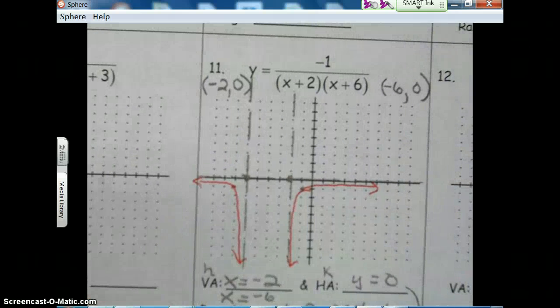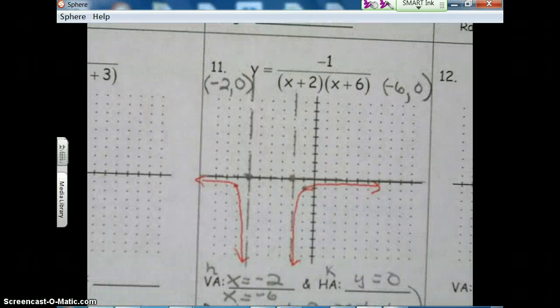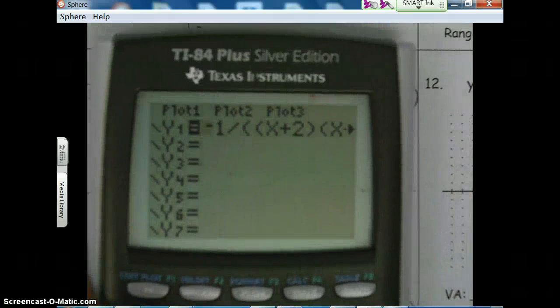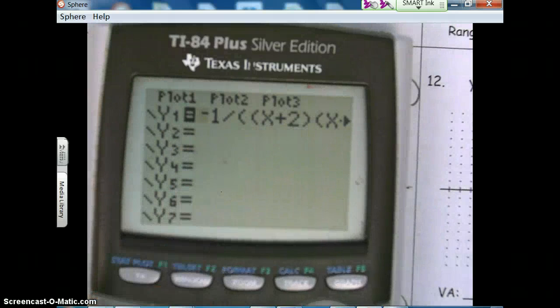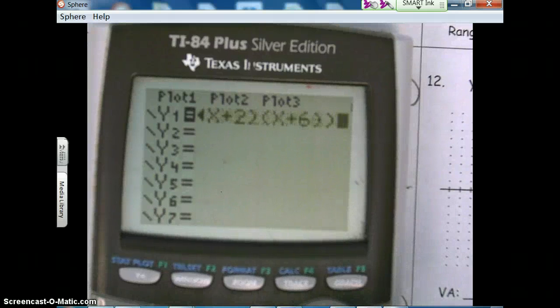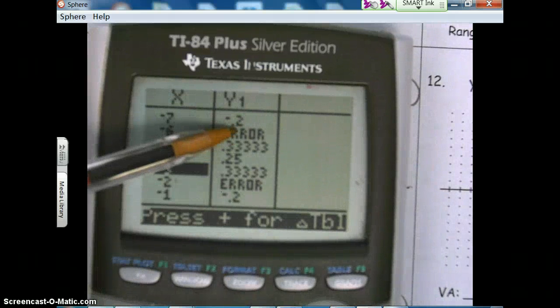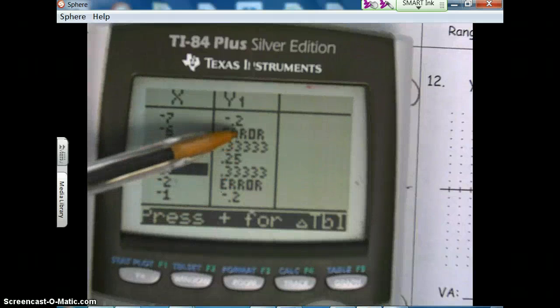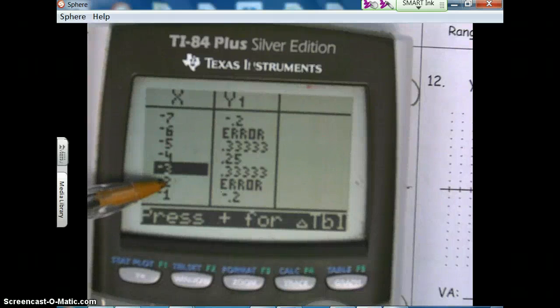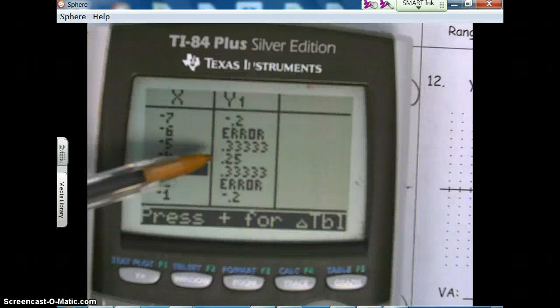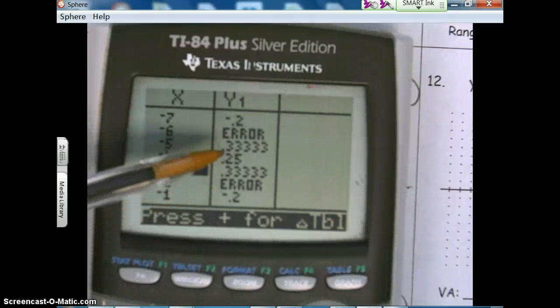Or, you can use your graphing calculator to help you out. So I plugged it in here. We got negative one over x plus two times x plus six. And then to get those middle points, they're going to be between the two vertical asymptotes. And you know where those vertical asymptotes are because there's an error there. There's a vertical asymptote at negative two, and there's a vertical asymptote at negative six. So these points in the middle, these are the ones between the vertical asymptotes.